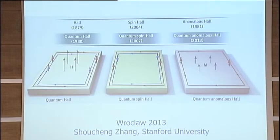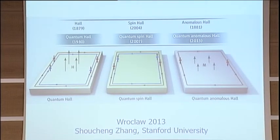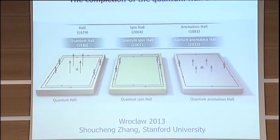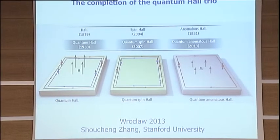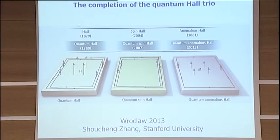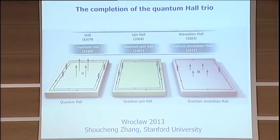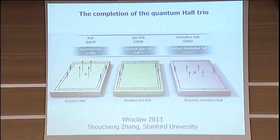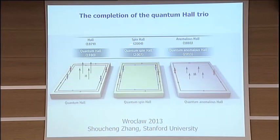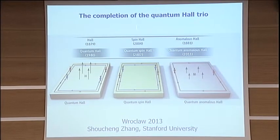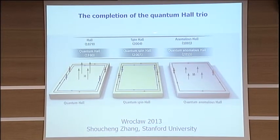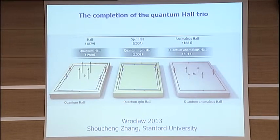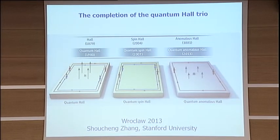This year, 2013, I think will become a historical year, in that we completed the entire table of the Hall Effects — starting from the Hall to Spin Hall to Anomalous Hall, and then to the quantum versions: the Quantum Hall, Quantum Spin Hall, and the Quantum Anomalous Hall.